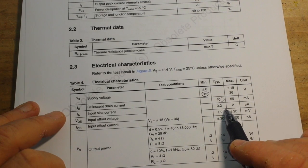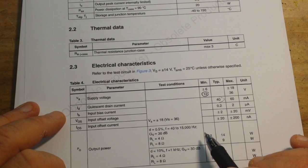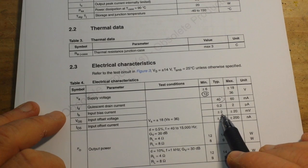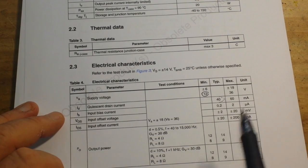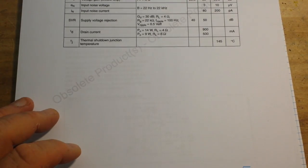Now our input bias is 0.2 to 2 microamps, and our offset voltage is plus 2 to plus 20 millivolts. Couple things to keep in mind.